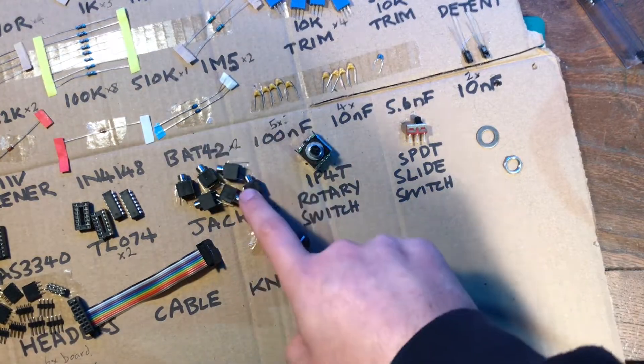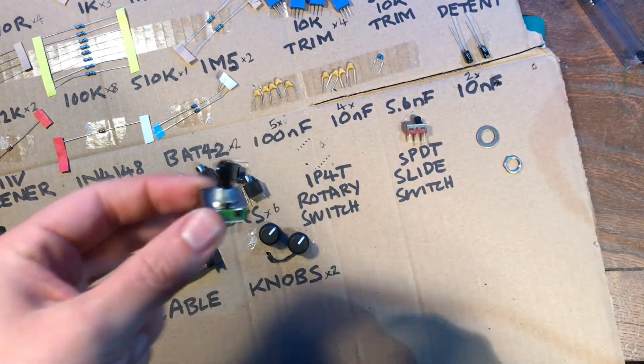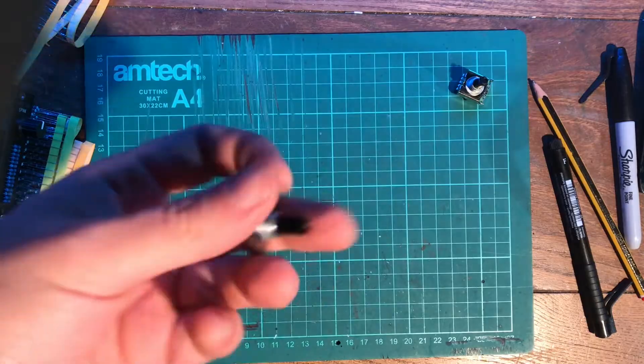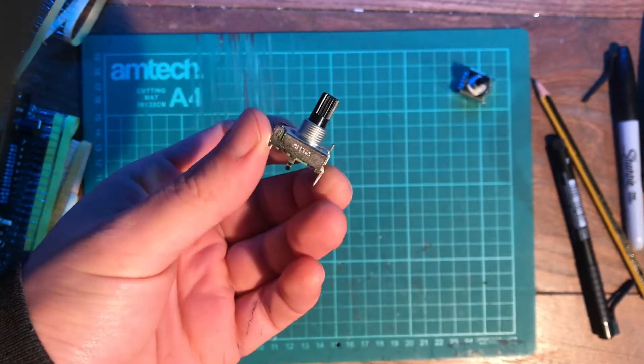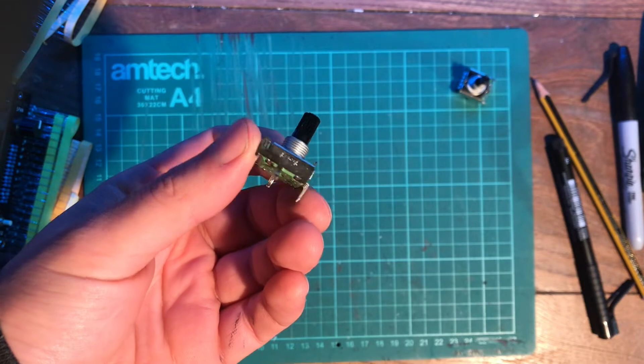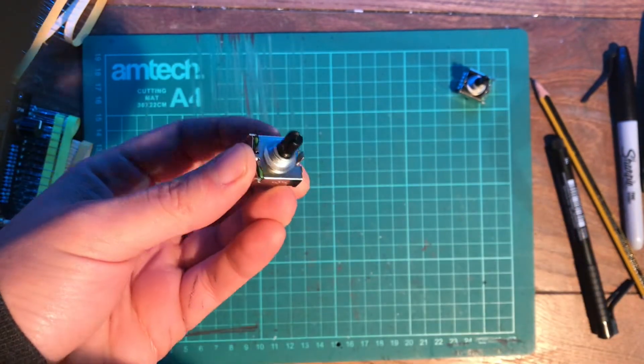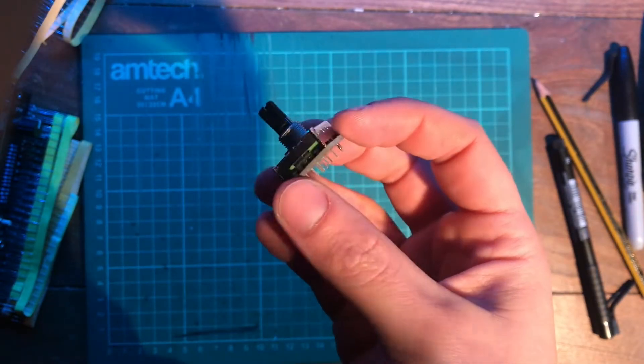You've got these nice Donkey Kong jacks and this rotary switch which is definitely worth a note because it's a bit unusual and a little bit hard to find on the internet. There's a few different versions of this switch. This one is a one pole four throw version which means there's four positions that it switches to. These four position ones are available from Syntaxis.